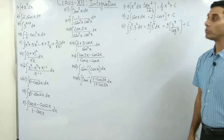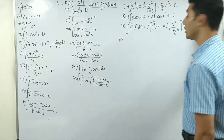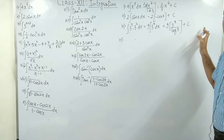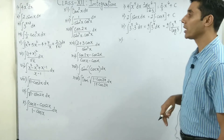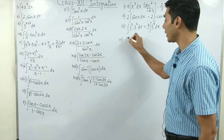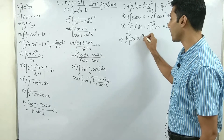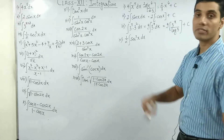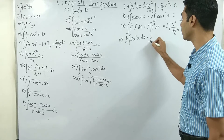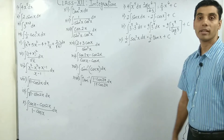Question number 4: integrate 1/2 sec squared x dx. Take 1/2 outside. The integration of sec squared x is tan x. So the answer is (1/2) tan x plus c. Remember to write the formulas you are using on the right-hand side.